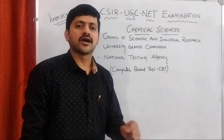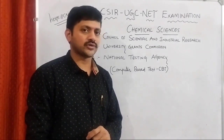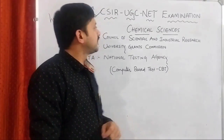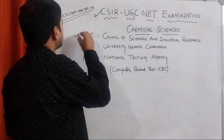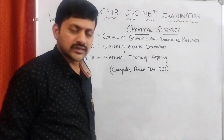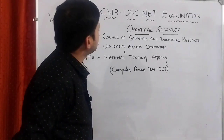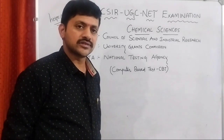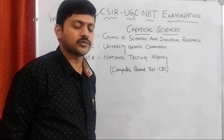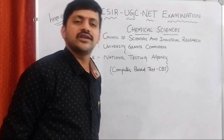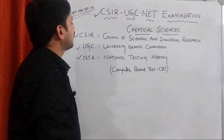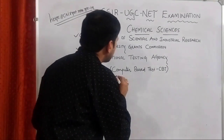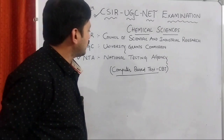We all know how important this particular examination is for all the chemistry aspirants who are pursuing MSc Chemistry. CSIR and UGC are two government organizations that combinedly conduct an examination called the CSIR UGC NET examination. Even though these two organizations conduct and give the research fellowship to pursue PhD in chemistry, the examination is conducted by NTA, the National Testing Agency, on a computer-based test.